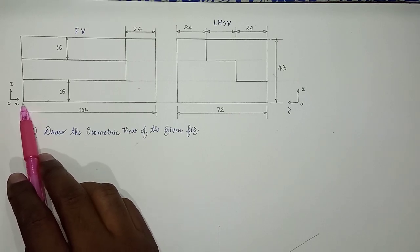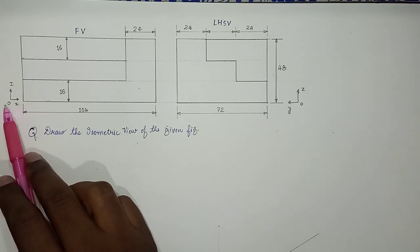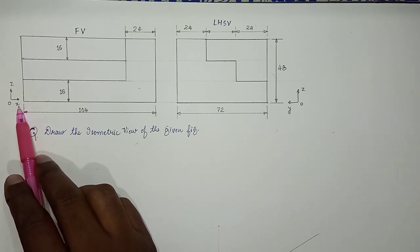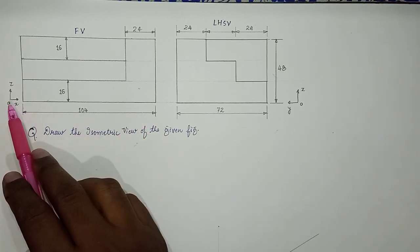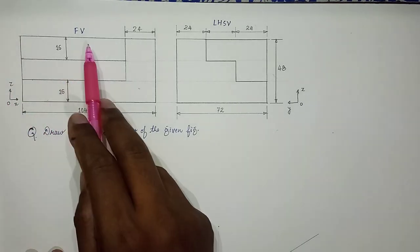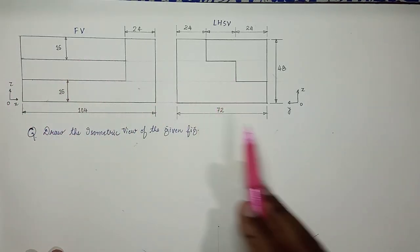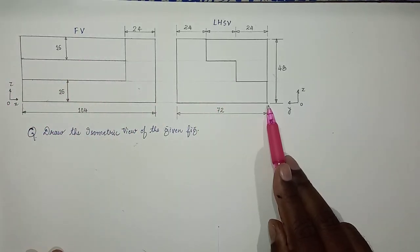So the left bottom corner will be the origin. So this is O origin, this is x-axis, this is z-axis for the front view. If you look for the side view, this corner will be the origin.